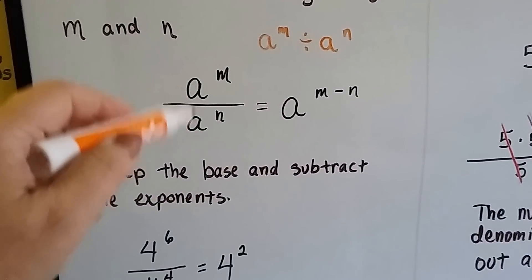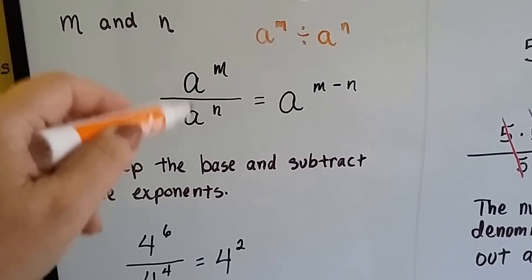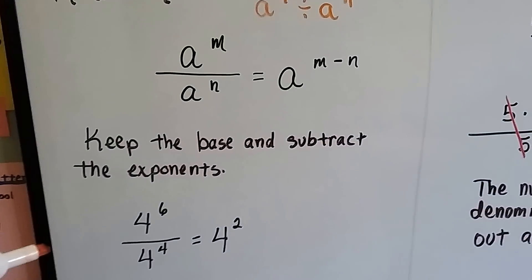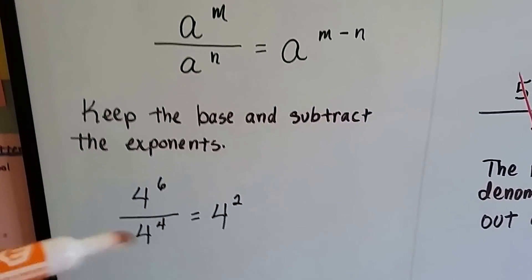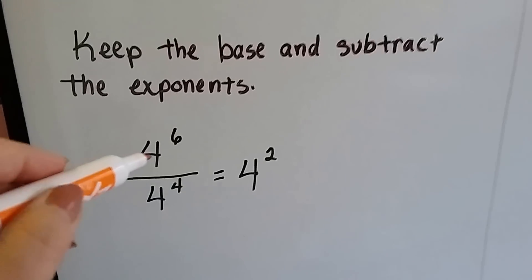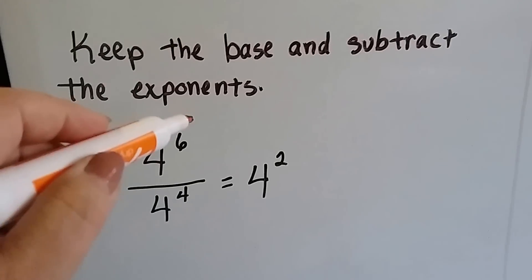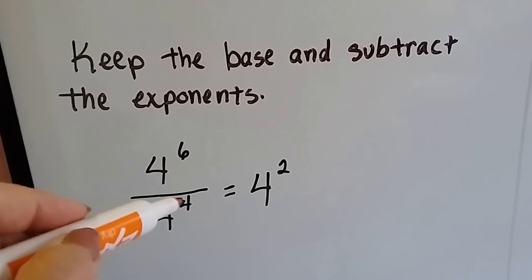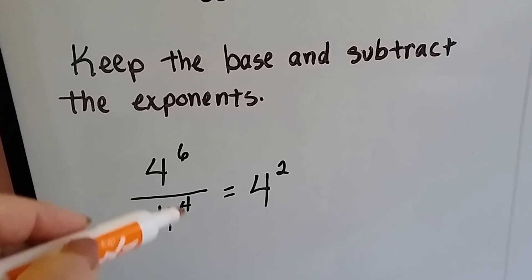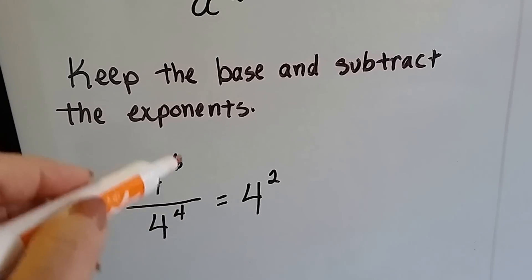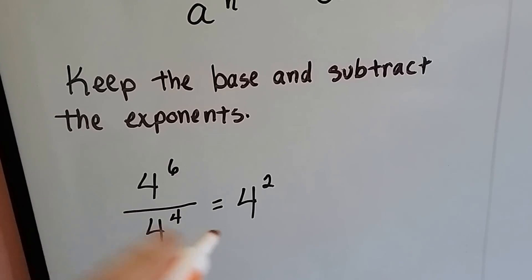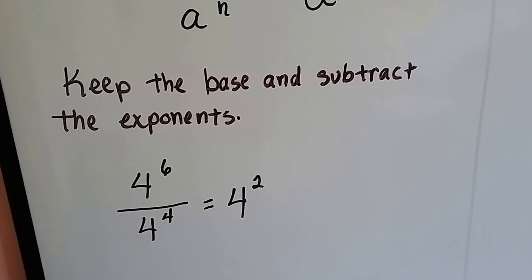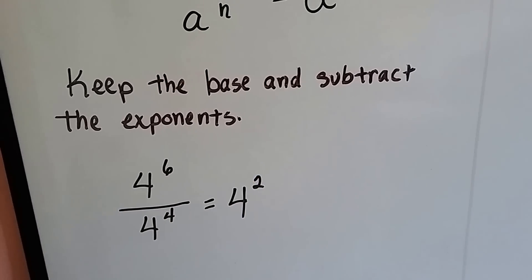This is when the bases are the same. You keep the base and then subtract the exponents. In numbers, if it was 4 to the 6th power over 4 to the 4th power, you just subtract the 4 from the 6 and we get 4 to the 2nd power, or 4 squared.